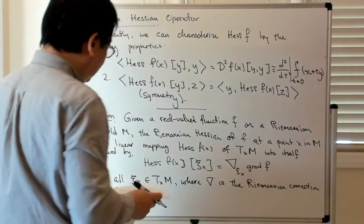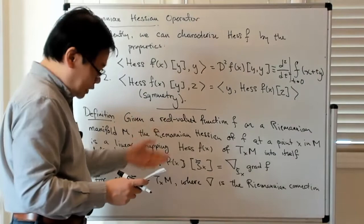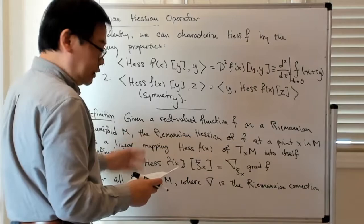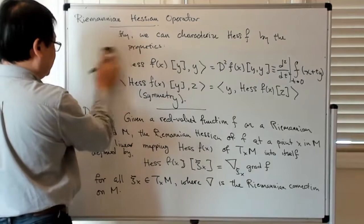And of course the nice thing about this is that as you might expect if you happen to be on a Euclidean space, then this reduces to the usual notion that we have of the Hessian on Rn.